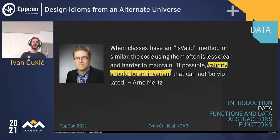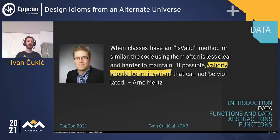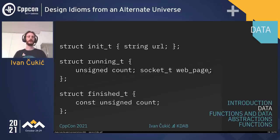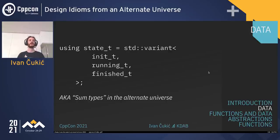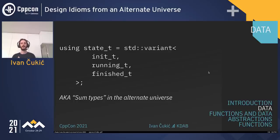I want to quote Arne Mertz: 'When classes have an is_valid method or similar, the code using them is often less clear and harder to maintain. If possible, validity should be an invariant.' This is something you should always live by. Instead of a single structure with everything inside, you can create different structures for different states — an init_t, running_t, and finished_t — each with exactly the member variables needed for that particular state, then compose them with std::variant.